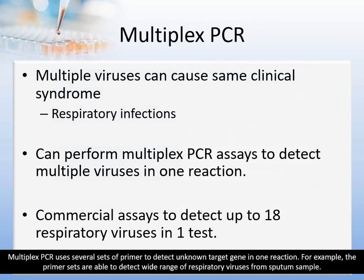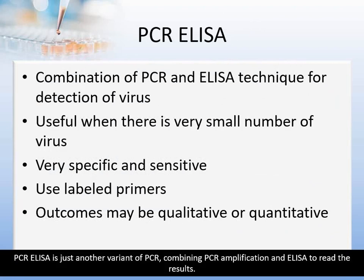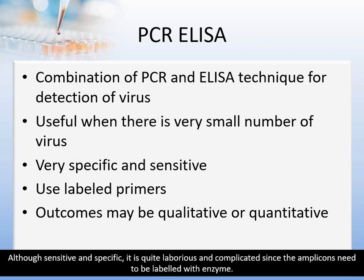Multiplex PCR uses several sets of primers to detect unknown target genes in one reaction. For example, the primer sets are able to detect a wide range of respiratory viruses from sputum samples. PCR-ELISA is another variant combining PCR amplification and ELISA to read the results. Although sensitive and specific, it is quite laborious and complicated since the amplicons need to be labelled with enzyme.